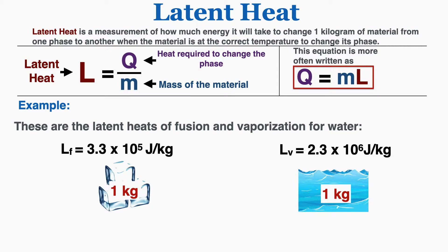Just as an example, these are the latent heats of fusion and vaporization for water. The latent heat of fusion is 3.3 times 10 to the fifth joules per kilogram, and the latent heat of vaporization is 2.3 times 10 to the sixth joules per kilogram.